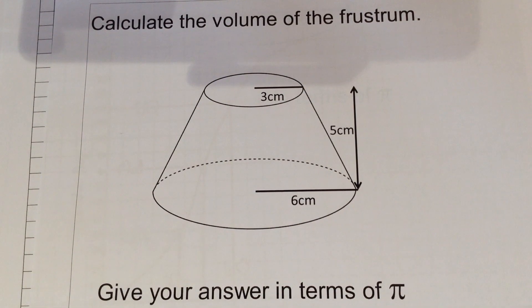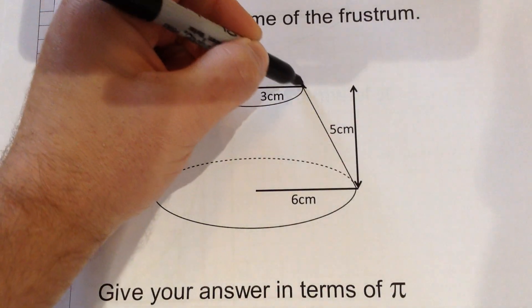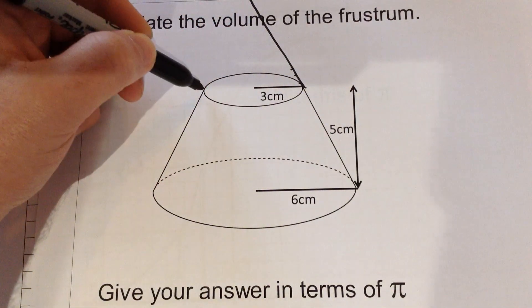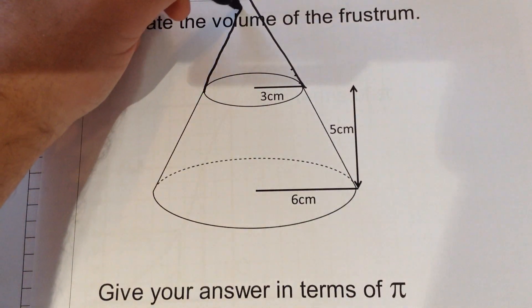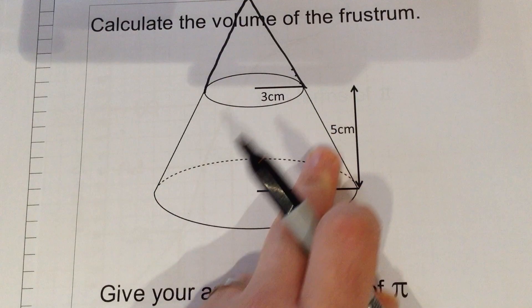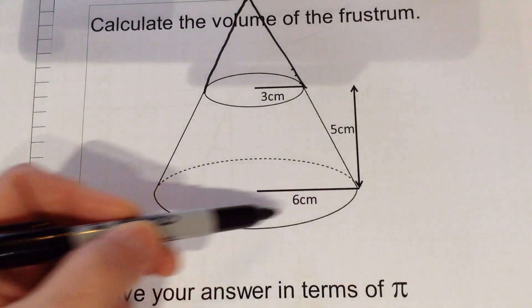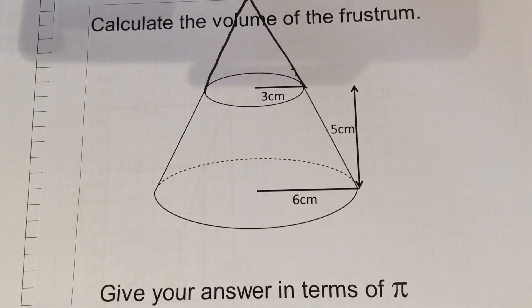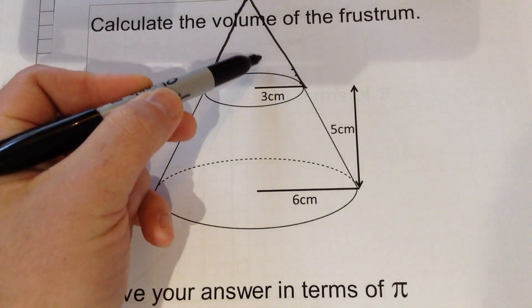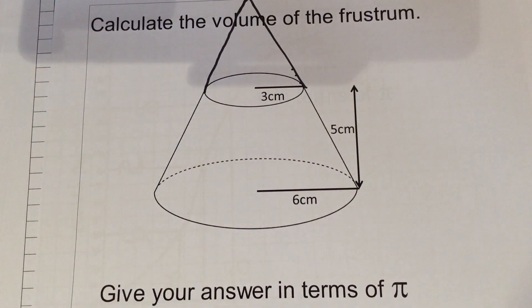In order to do a shape like this, it's normally better to try and visualize the full shape. So if I were to draw on the rest of this cone as it were up at the top, what we've actually got, in order to work out the volume of this frustum, this bit at the bottom, is our best bet is to work out the volume of the full cone with this top bit added on, to work out the volume of the small cone that we've cut away, and then take that away from the big cone.